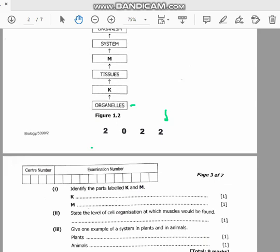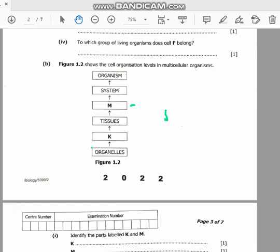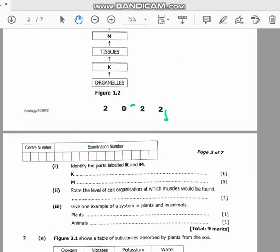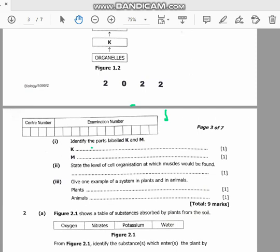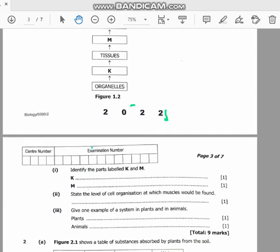Identify the parts labeled K and M. So from organelles to K: a group of organelles forms cells. Then a group of cells forms tissues. From tissues to organs, organs to system, system to organism. So part K is cells, then M is organ.